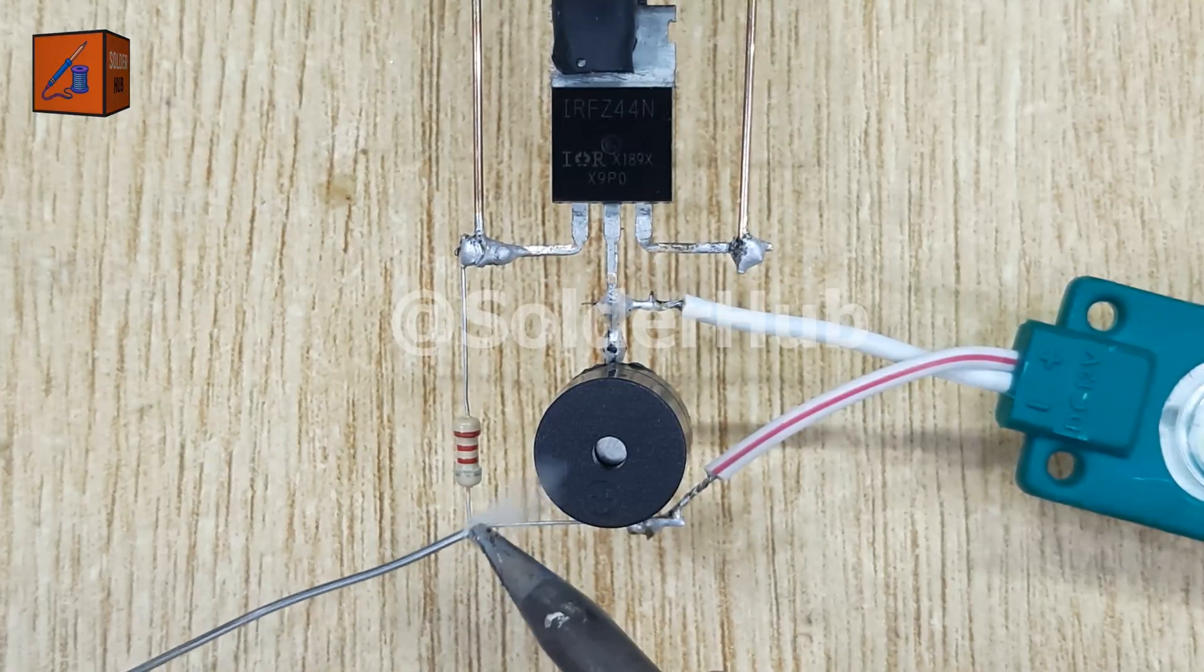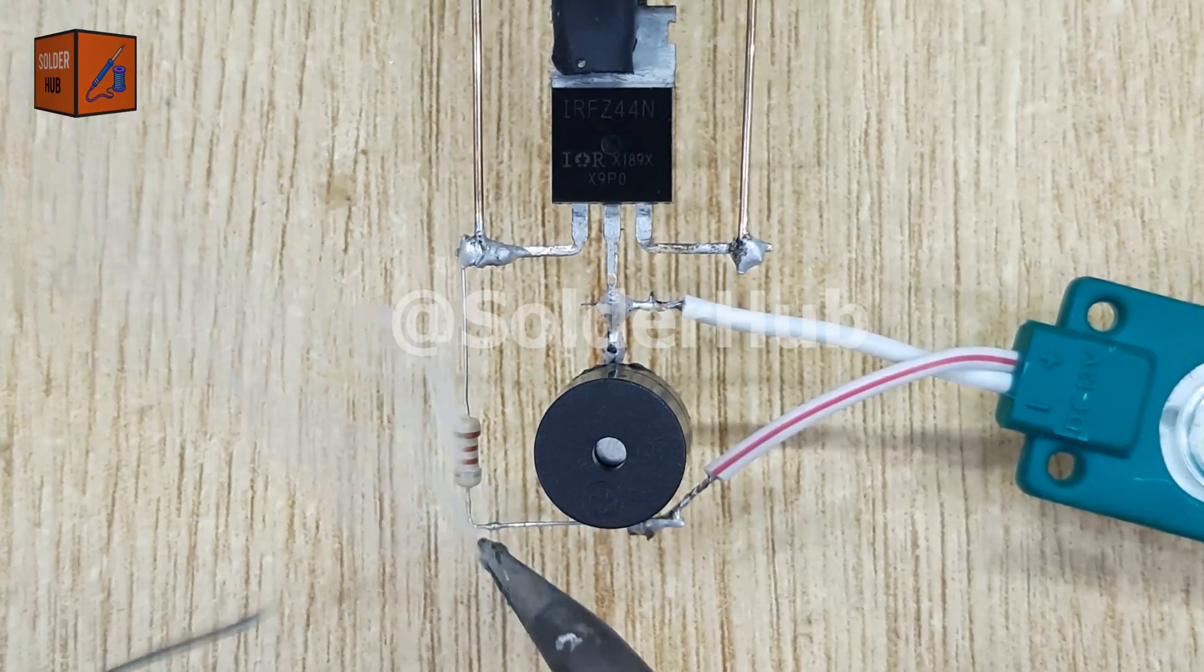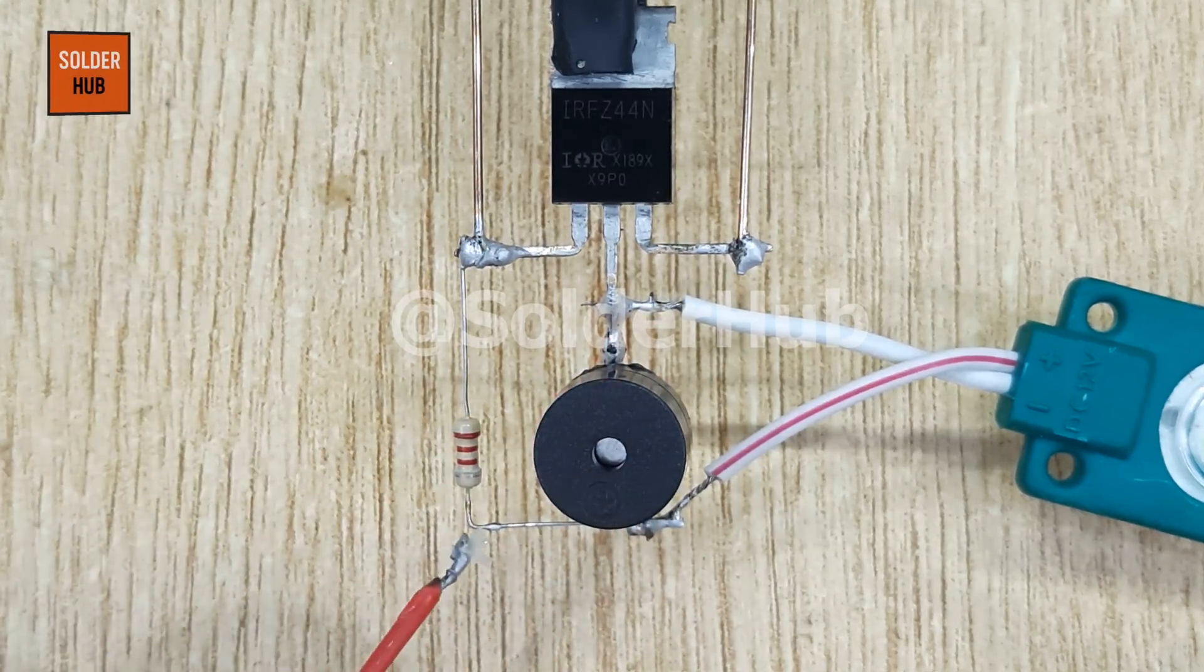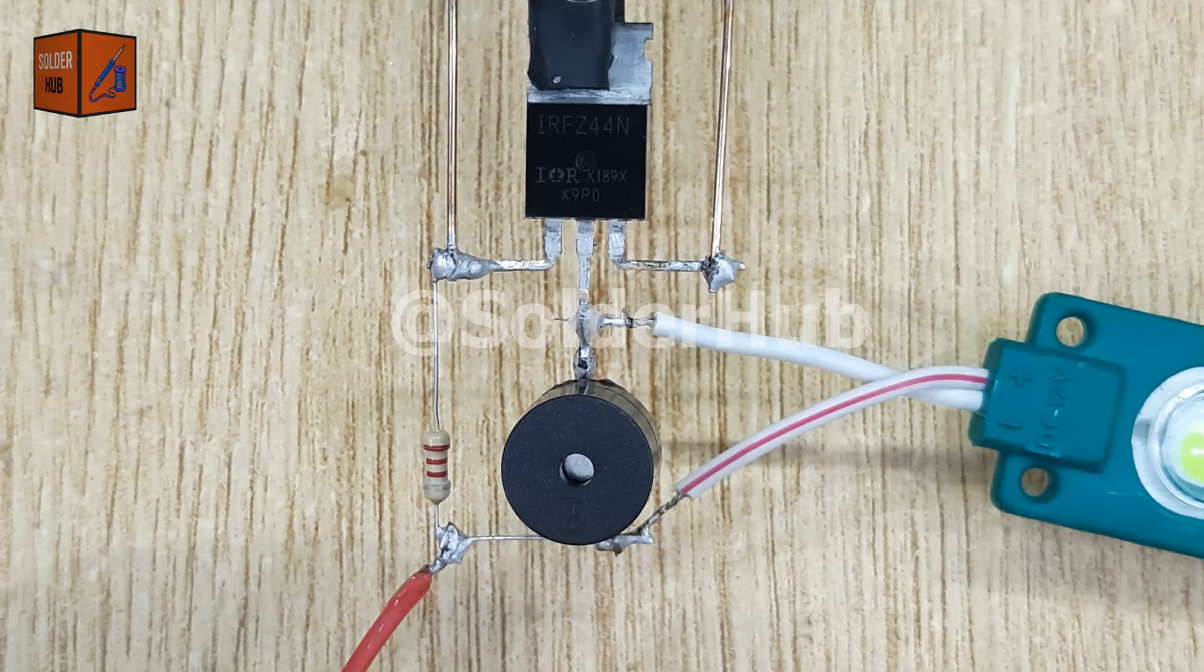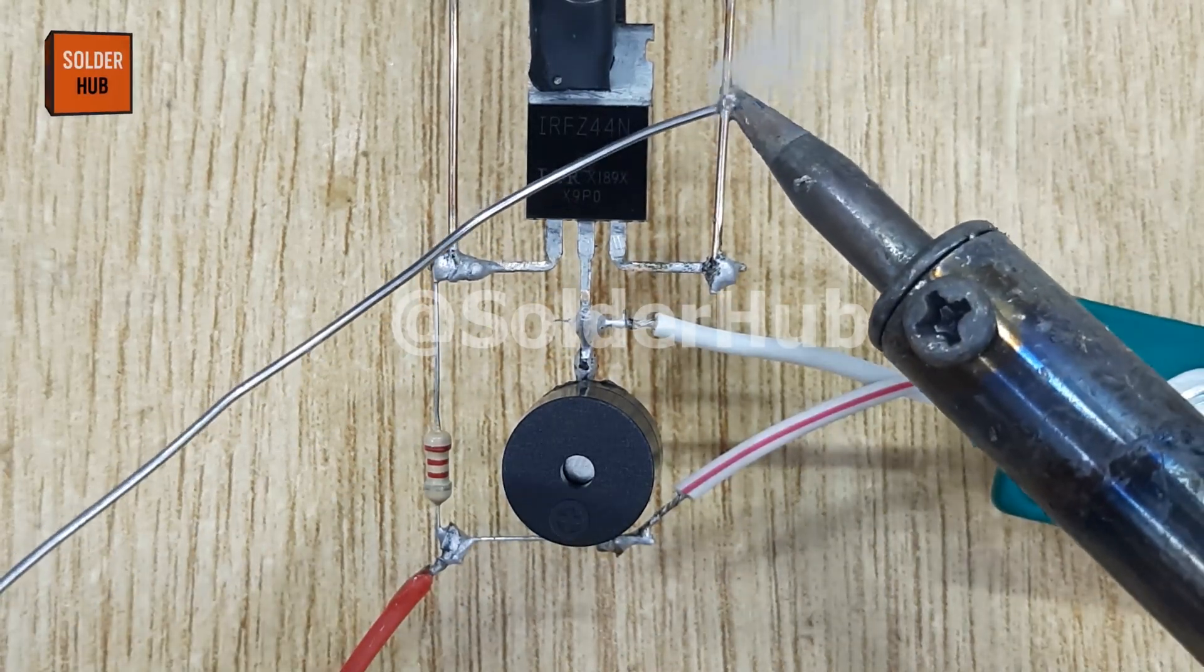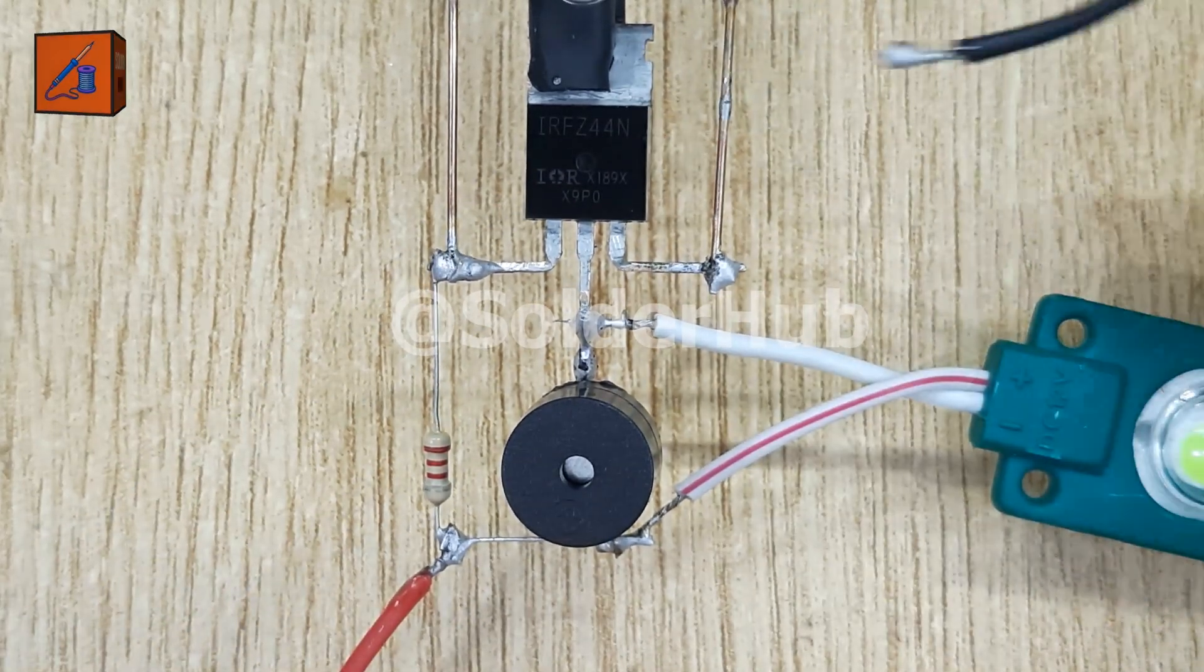It's time for the power supply. I use a 12-volt battery. I solder the positive wire of the battery to the positive pin of the buzzer and the negative wire of the battery to the drain pin of the MOSFET. With this connection, our circuit is now complete.